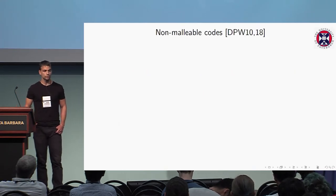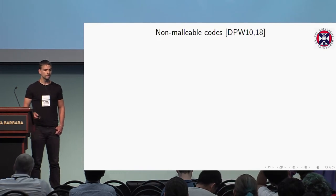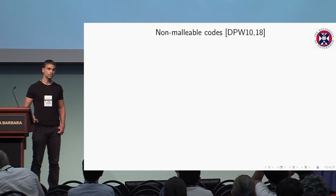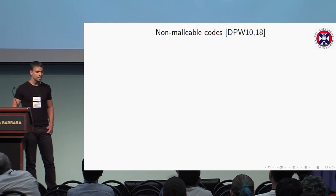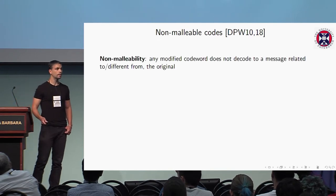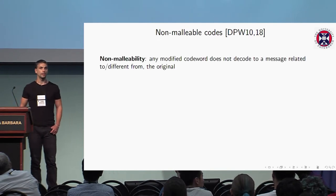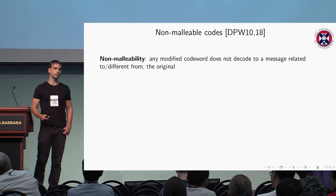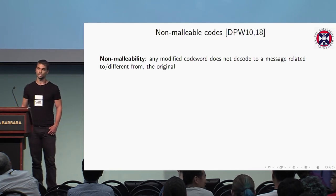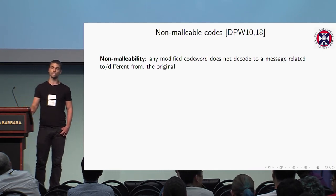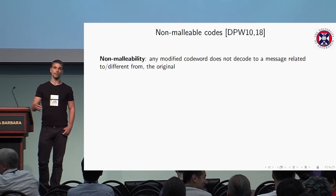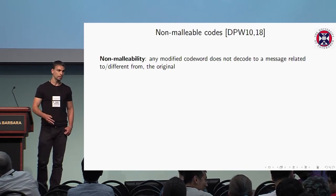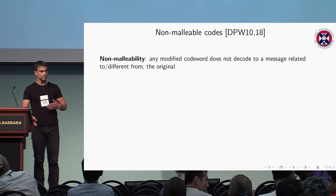Non-malleable codes were introduced by Dziembowski, Pietrzak, and Wichs in 2010. This year we also have the journal version of their paper. Informally, non-malleability means that you cannot create correlated codewords, meaning that you cannot tamper with a codeword in a way that decodes to a message which is related to the original one — of course, if it is different.